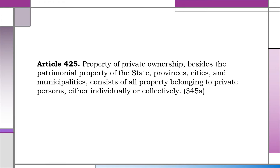Article 425. Property of private ownership, besides the patrimonial property of the state, provinces, cities, and municipalities, consists of all property belonging to private persons either individually or collectively. Other private properties are those that belong to private persons individually or collectively. Collectively refers to ownership by private individuals as co-owners or by corporations, partnerships, or other juridical persons such as foundations who are allowed by the civil code to possess and acquire properties. Based on decided cases, possession by private persons since time immemorial carries the presumption that the land had never been part of the public domain or that it had been private property even before the Spanish conquest.